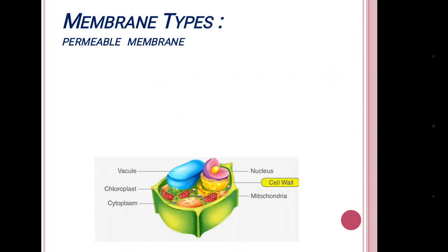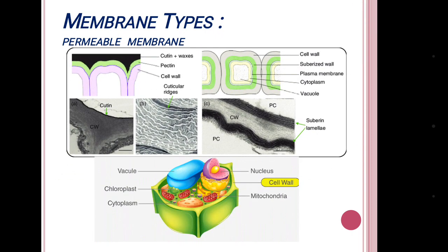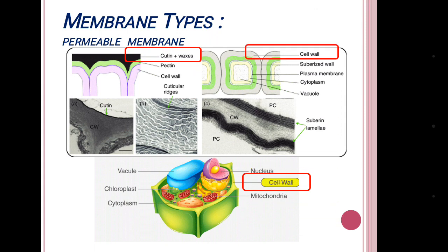The second type is permeable membrane. The cell wall is a permeable membrane because it is made up of hydrophilic colloidal substances. While the cutin is impermeable, the cell wall is permeable.